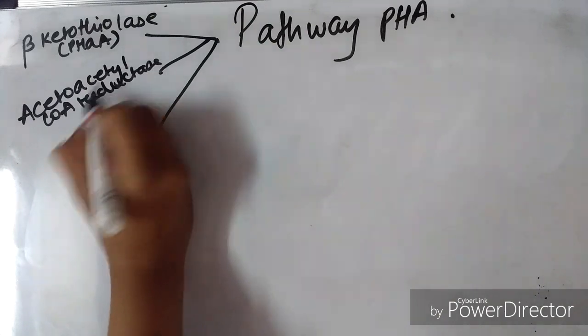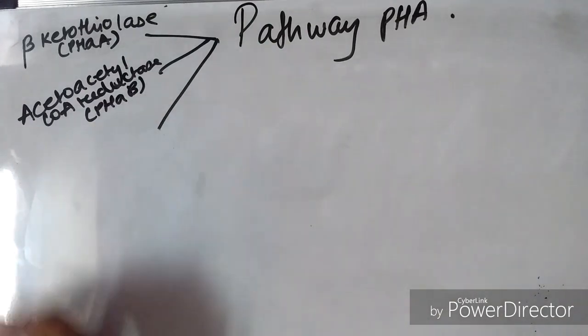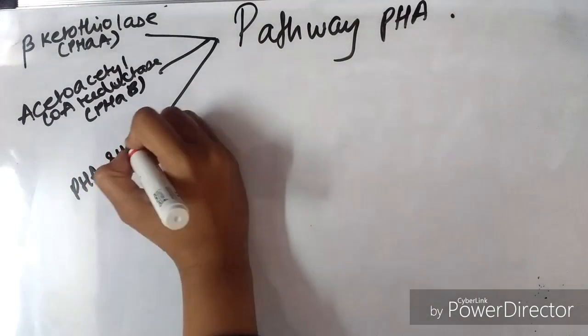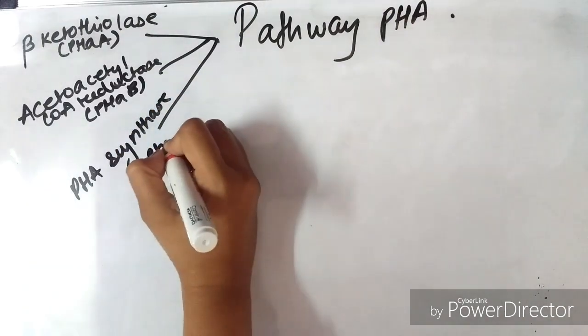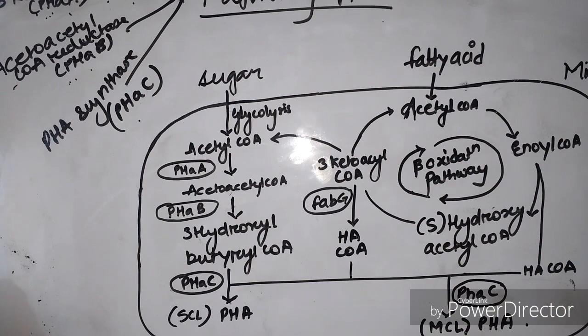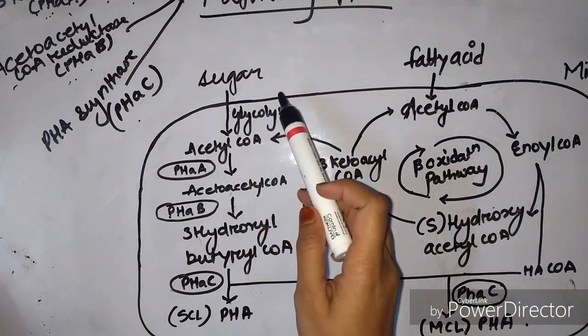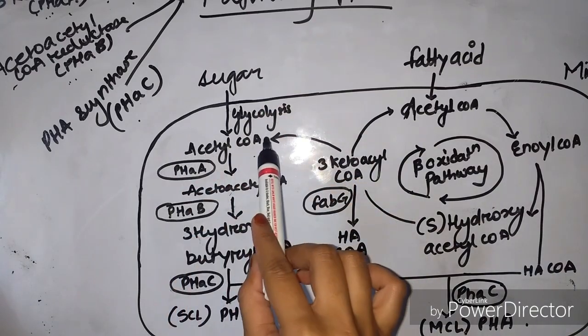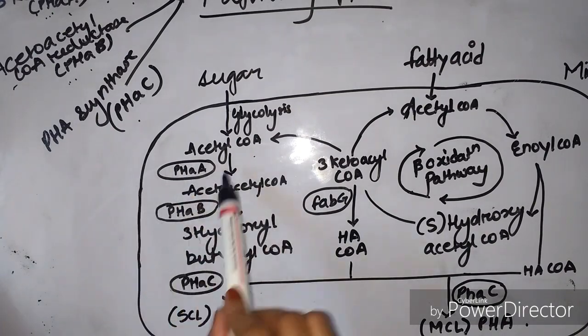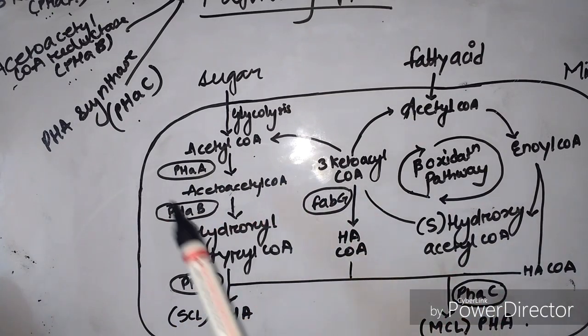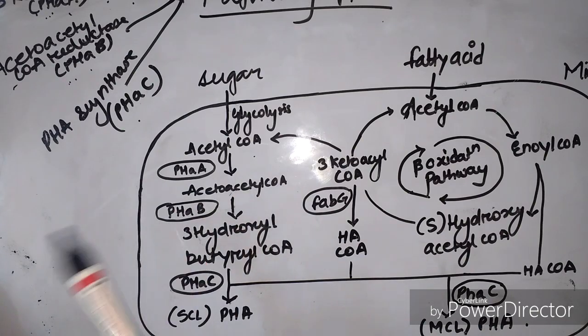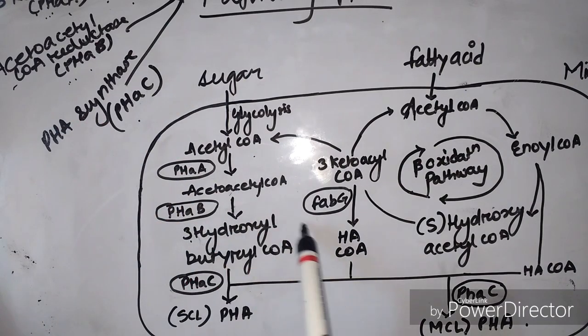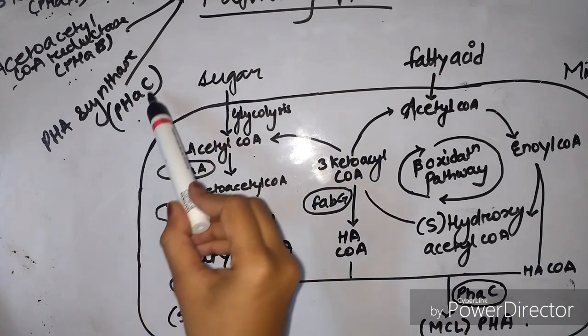Now we will see how the sugars and fatty acids present in the media are fermented and PHA is produced inside the cell. The sugars present in the media are taken by the bacteria and the first cycle performed is glycolysis. From glycolysis, we get acetyl-CoA. Then the PhaA enzyme, which is ketothiolase, acts to give acetoacetyl-CoA.